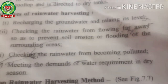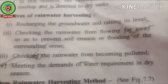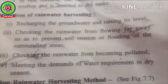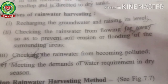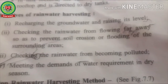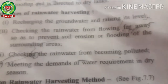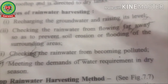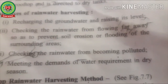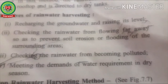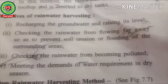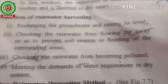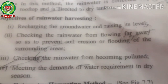Another objective is checking rainwater from becoming polluted. Rainwater harvested from rooftops is nearly as clean as pure water, though some contaminants can be present. It is possible to control water quality and bring it to an acceptable level using simple and inexpensive devices. Finally, harvested water meets the demands of water requirements in the dry season — it can be used for irrigation, domestic purposes, and more.